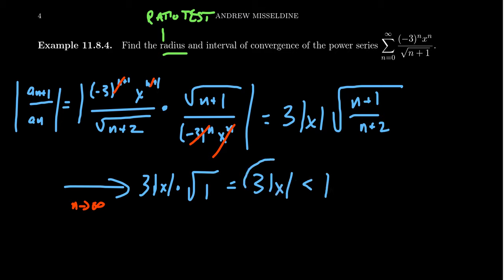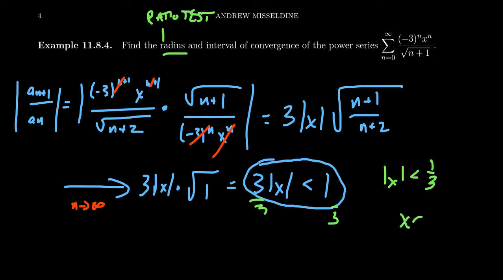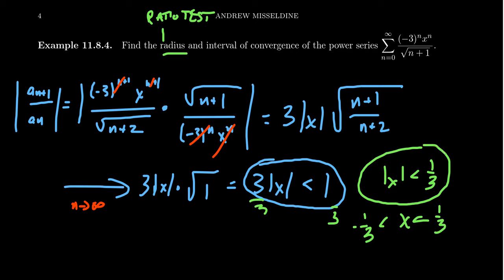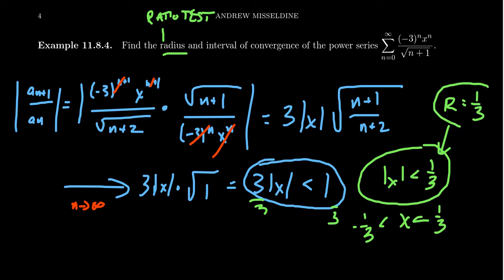We solve the inequality: when is 3|x| less than 1? Dividing both sides by 3, we get |x| < 1/3, meaning x is between -1/3 and 1/3. Once we have |x - a| less than some positive number, that number is the radius of convergence. So our radius of convergence R equals 1/3. The series converges for |x| < 1/3 and diverges for |x| > 1/3.